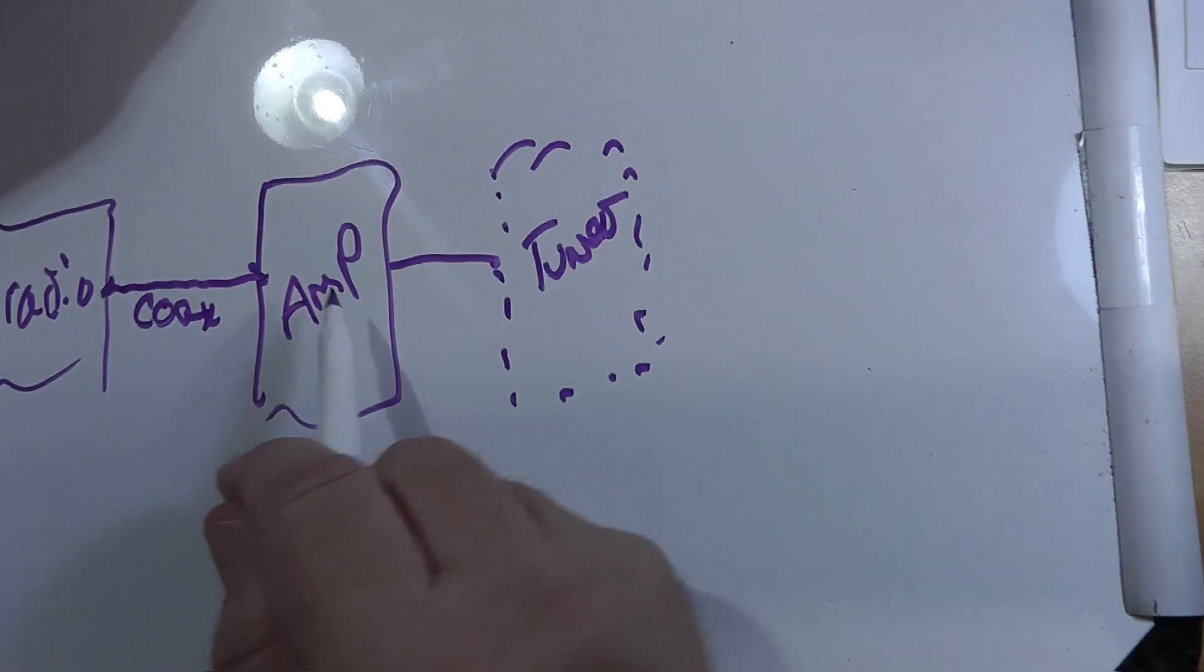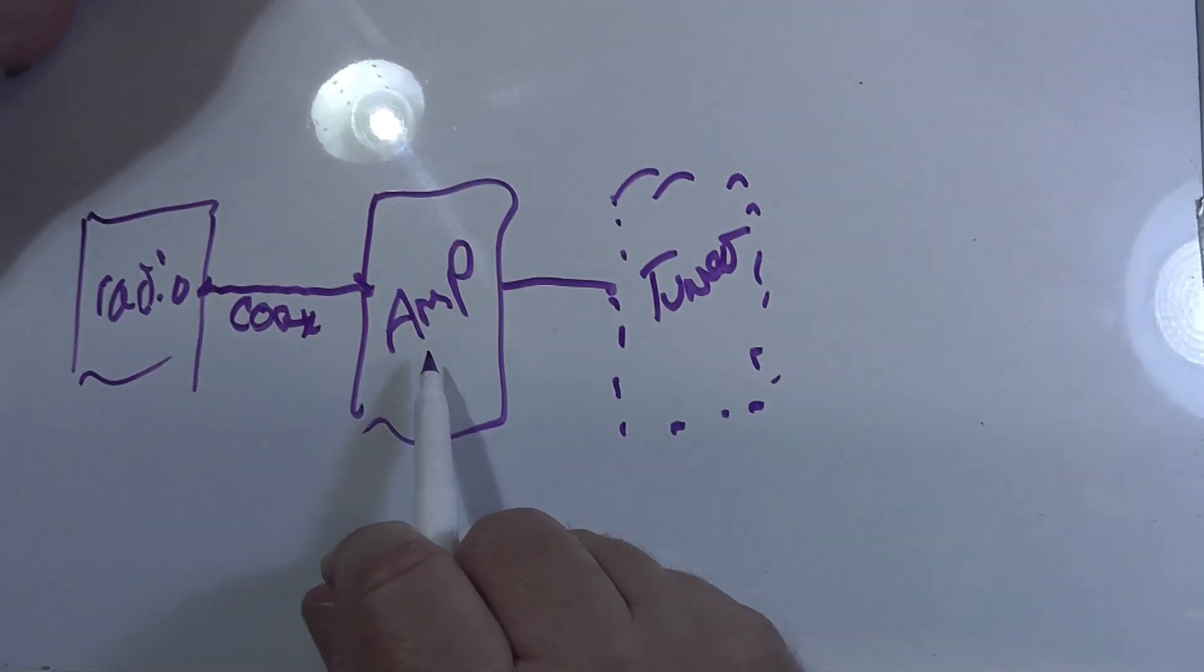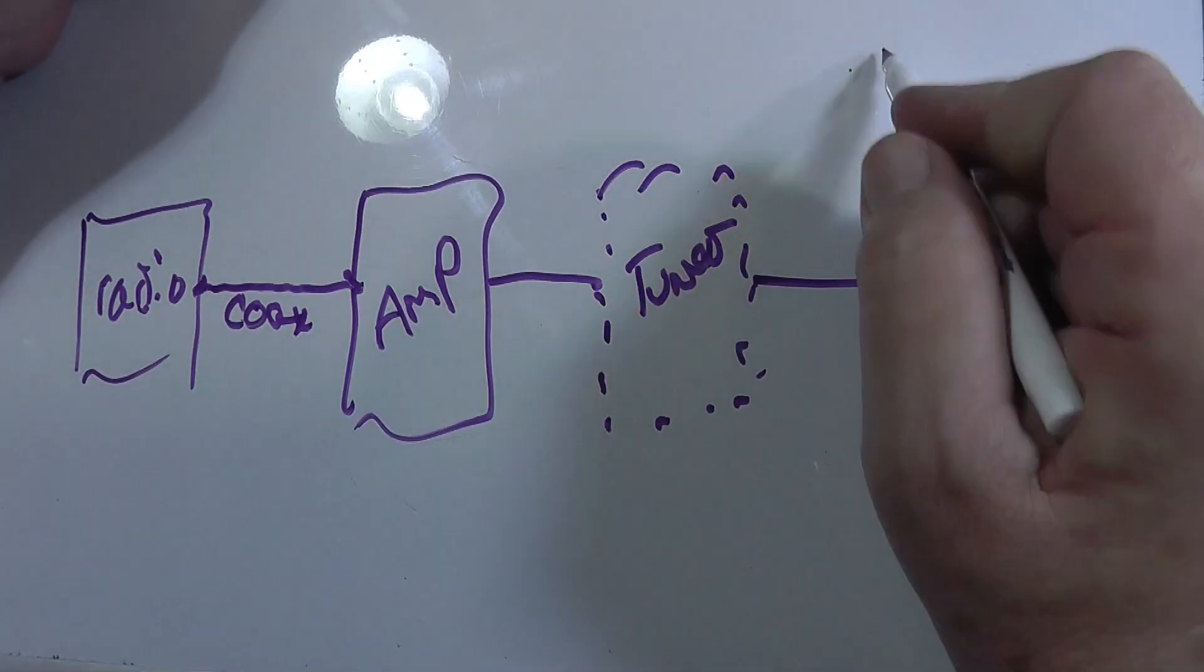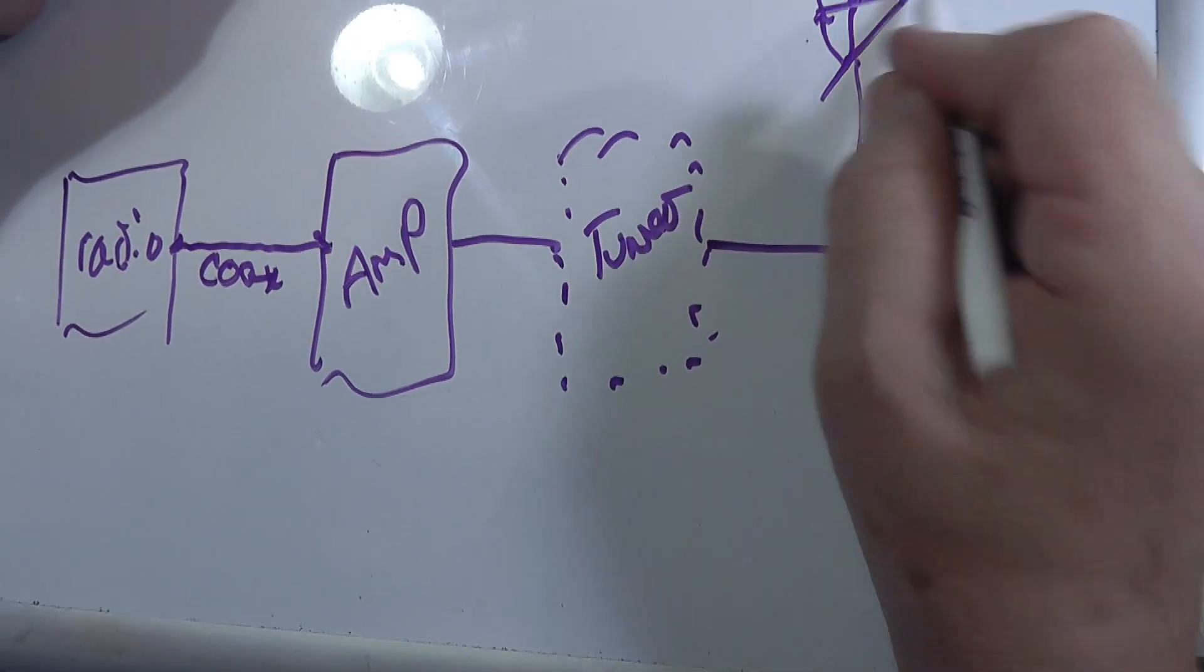Older tube amps, that's not always true and you might need a little tuner here. But all the newer amps, you've got this. And then this of course goes to the antenna.